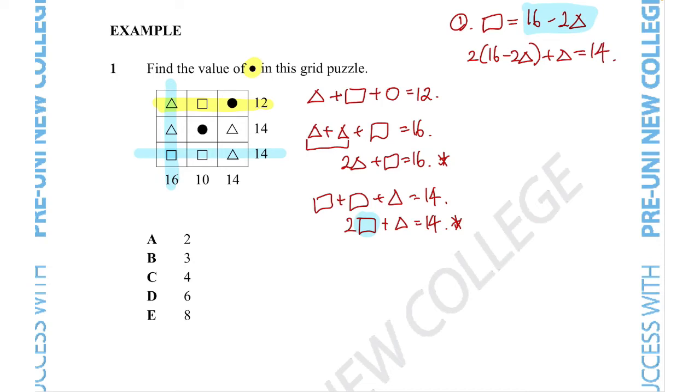So using our normal algebraic equations, this simplifies to 32 minus 4 triangle plus triangle is equal to 14, which simplifies into negative 3 triangle is equal to 14 minus 32, which is equal to negative 18. That gives us triangle is equal to 6. Now that we know what the triangle is equal to, we can then fit this one into this first equation to figure out what the square is equal to. If our square is equal to 16 minus 2 triangle and we know what the triangle is equal to, this gives us 16 minus 12 is equal to 4. So the square is equal to 4.